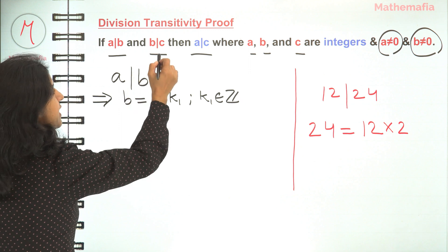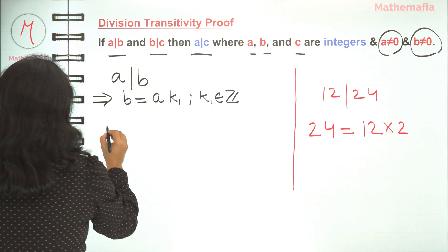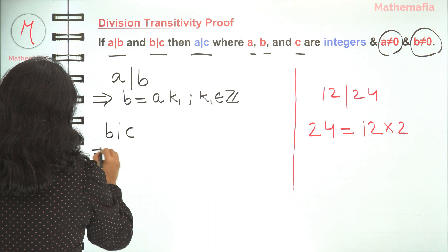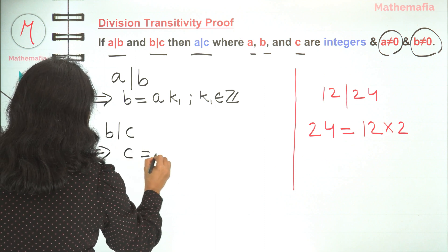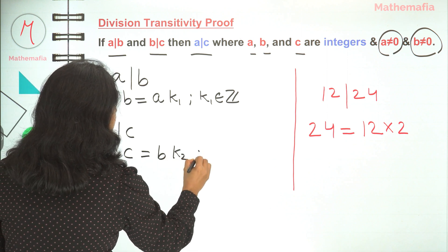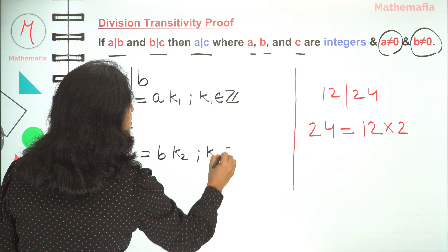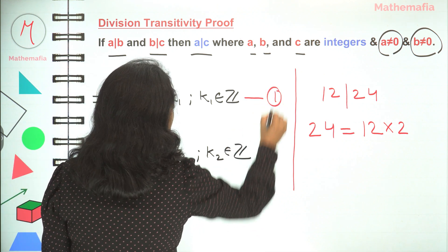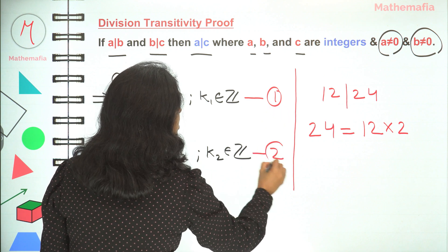Now we are also given that b divides c. This would mean that c can be written as c equals b times some integer, say k2. So k2 also belongs to the set of integers. Let's call this as equation number 1 and this as equation number 2.